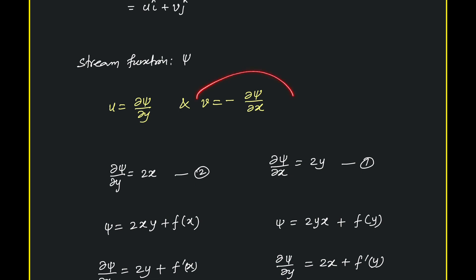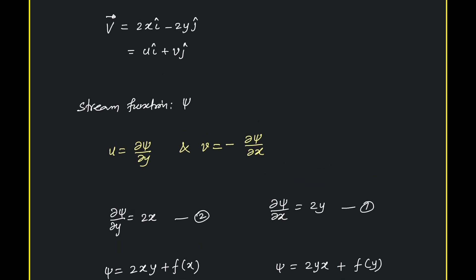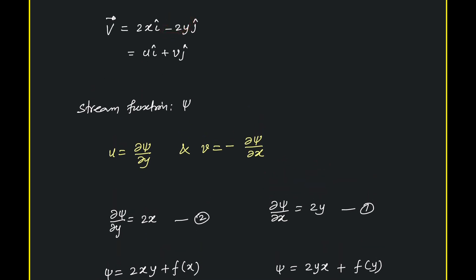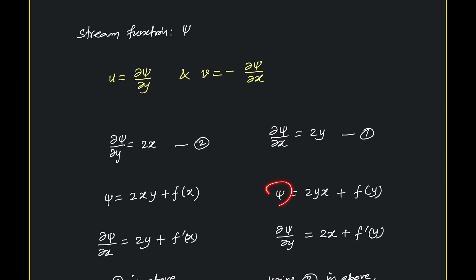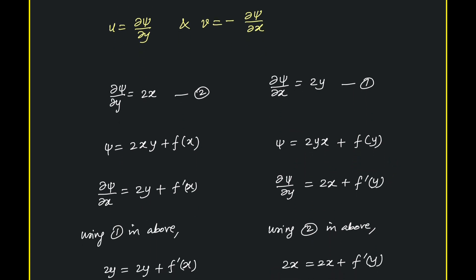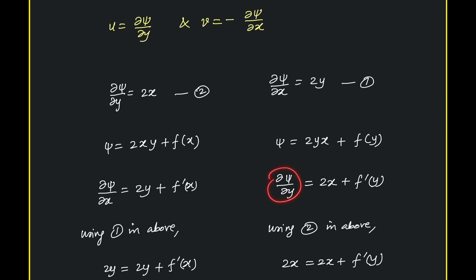Now, v equals minus ∂ψ/∂x, so ∂ψ/∂x equals minus v. Since v is 2y, integrating with respect to x, we get 2yx, and the integration constant is a function of y. We can also take a derivative, since we already have ∂ψ/∂y available, and compare with it.